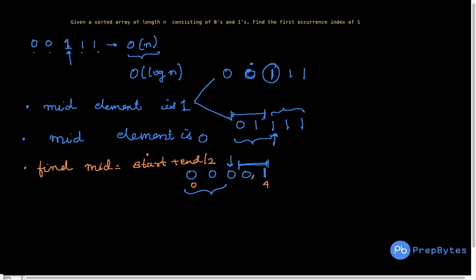One important thing: it's always better to calculate mid as start plus (end minus start) divided by 2, because this avoids integer overflow. We explained this when covering binary search, so make sure you've watched that as well.